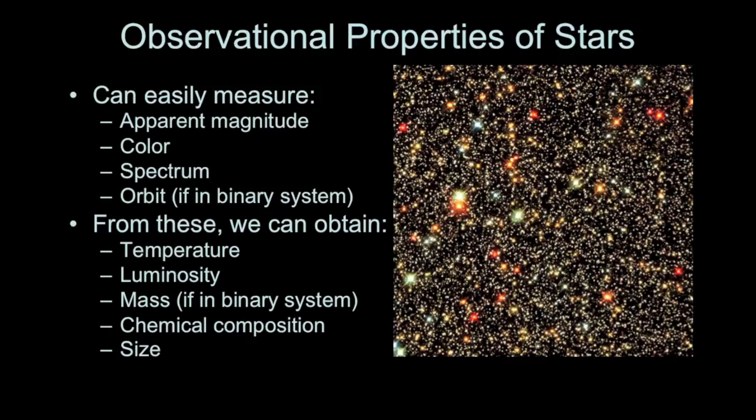From these we can determine some other properties for stars such as temperature, luminosity, mass of a star if it's in a binary system and the chemical composition of a star. We can also determine the size given the temperature and the luminosity.